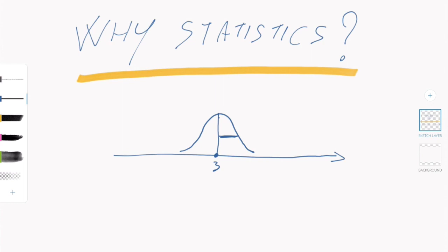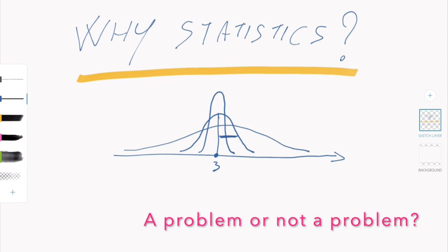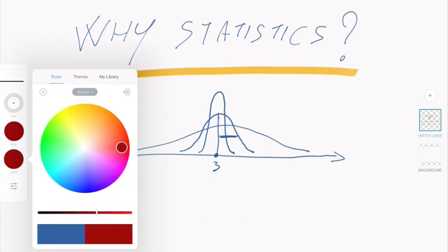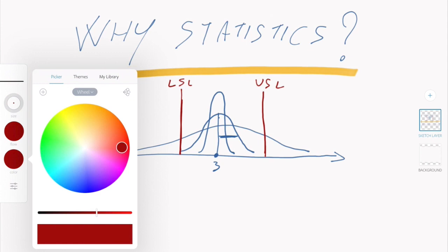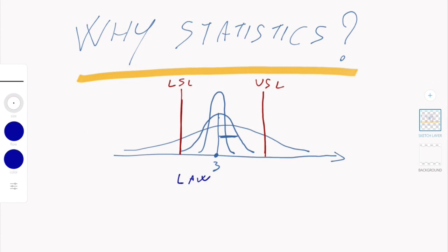The point is how variable is your process. You could have a very narrow distribution of values around three, or you could have a wide distribution of values around three. Whether this is a problem or not depends on your specification limits — the upper specification limit and the lower specification limit.